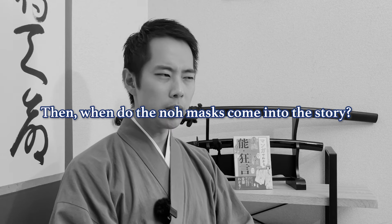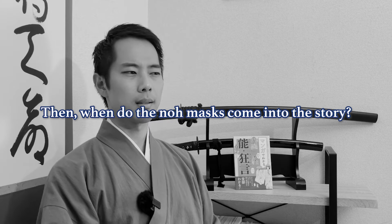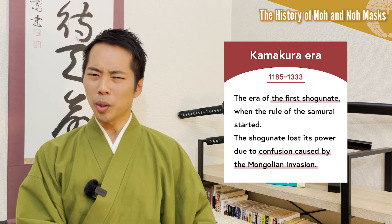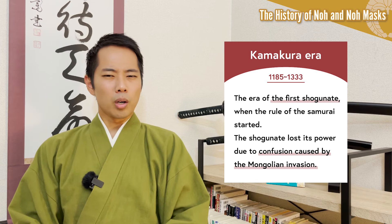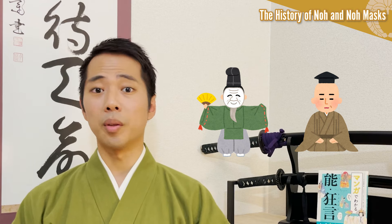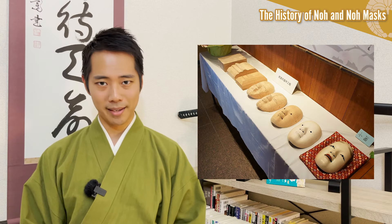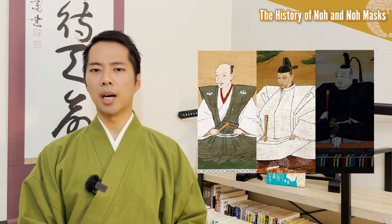When do the no-masks come into this story? The origins of the masks actually dated back to the Kamakura period, during the development of no-theater when it was still more of a comedy show. By the time Kangami and Zeami completed no-theater during the Muromachi period, many different kinds of masks were created by talented craftsmen all over Japan. Around the time of rule by Oda Nobunaga and Toyotomi Hideyoshi, the no-masks reached their full development.